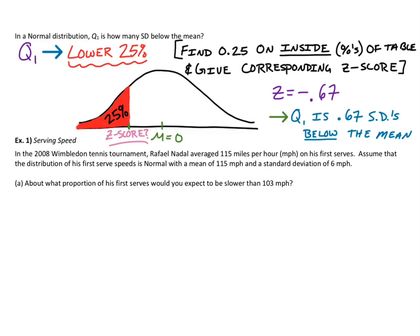In particular, we'll look at serving speeds for Rafael Nadal. In the 2008 Wimbledon tennis tournament, Rafael Nadal averaged 115 miles per hour on his first serves. Assume that the distribution of his first serve speeds is normal with a mean of 115 miles per hour and a standard deviation of six miles per hour. Part A asks: about what proportion of his first serves would you expect to be slower than 103 miles per hour?